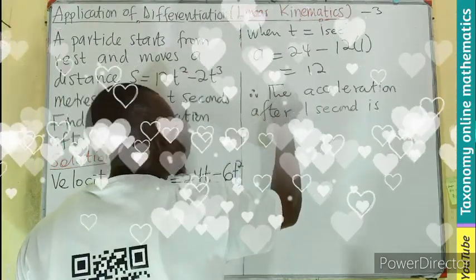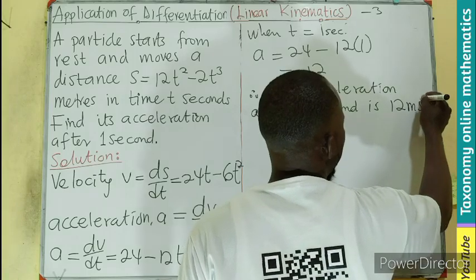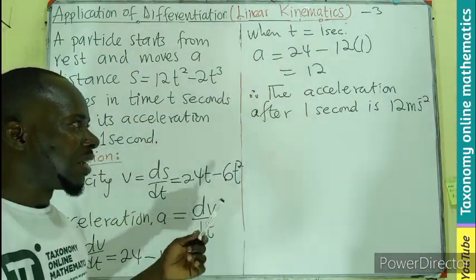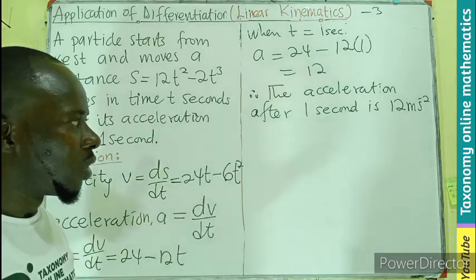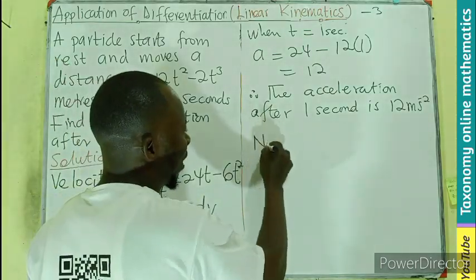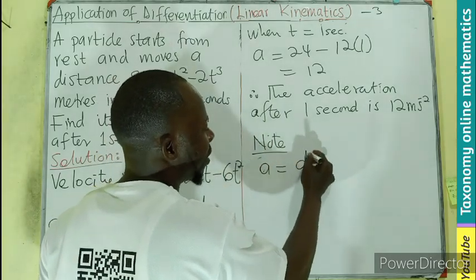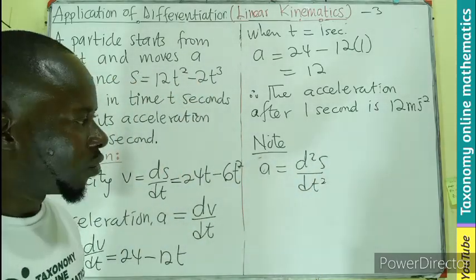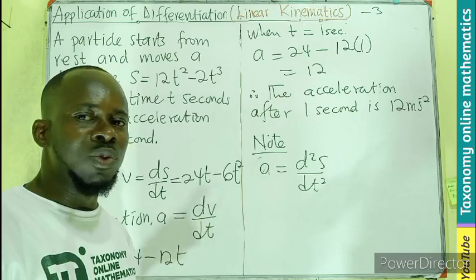Therefore, the acceleration after 1 second will be 12 meters per second squared. Meter for distance, then the seconds has been differentiated 2 times. So we also know that acceleration is d²s over dt squared, so the meter, then the time squared will be what we are seeing.